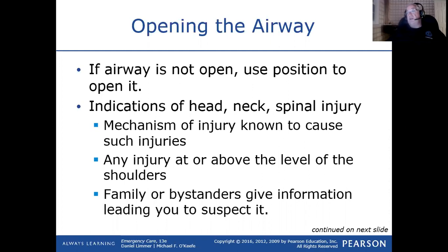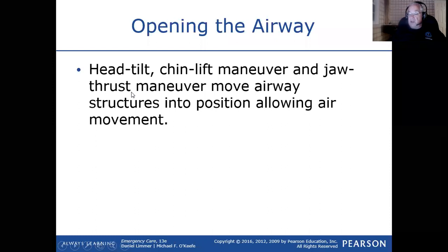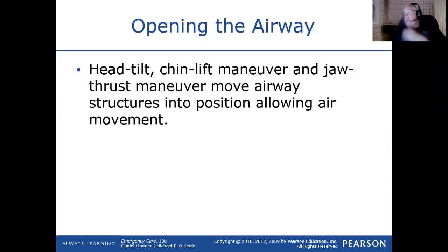The jaw thrust doesn't work very well, even on mannequins. We try it in case air goes in, but if it doesn't and we need to ventilate, we revert to head tilt chin lift. The head tilt chin lift tilts the head back into position — sometimes you need to reach under the neck to tilt it slightly. What you're really doing is raising the mandible straight up, because the tongue is attached to the lower jaw. The higher you raise the lower jaw, the more you pull the tongue away from the posterior oropharynx, which is where snoring comes from.